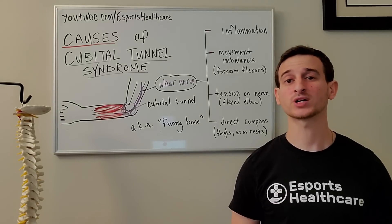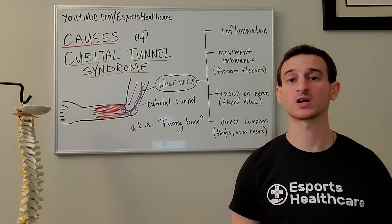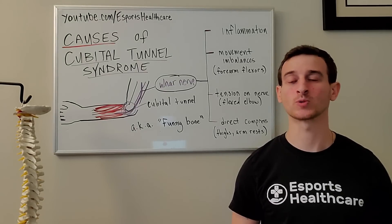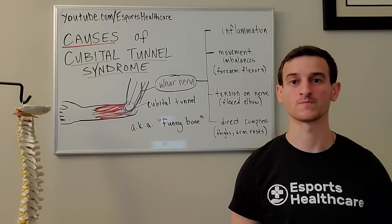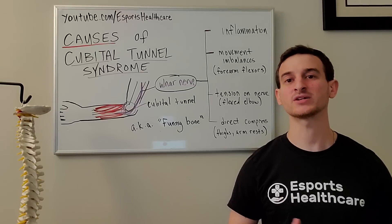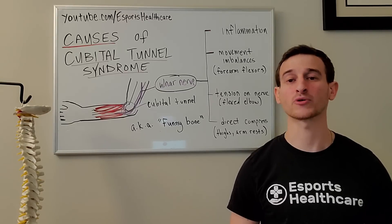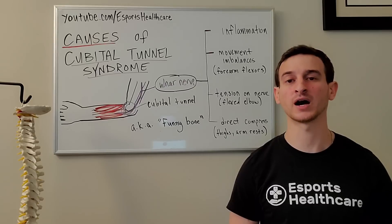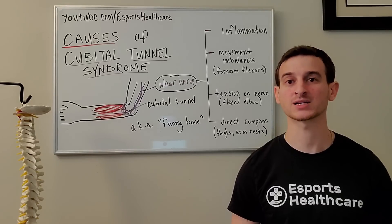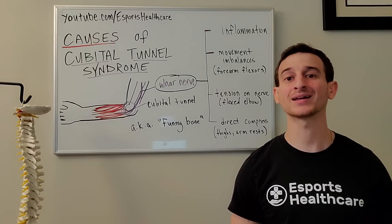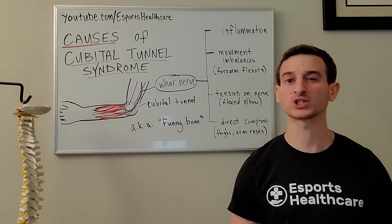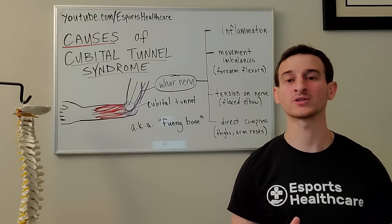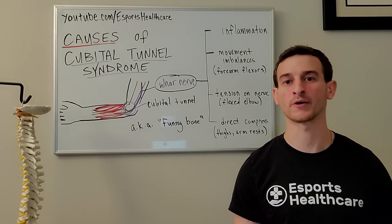Direct compression of the cubital tunnel itself can lead to cubital tunnel syndrome. By resting your elbows on your thighs or improperly on your armrest, this may place enough pressure on the inside of your elbow to irritate that ulnar nerve.